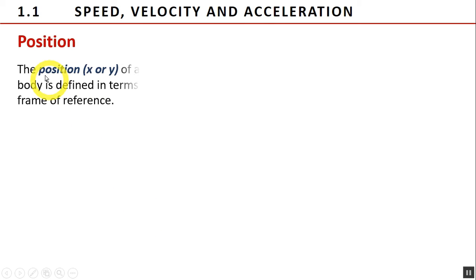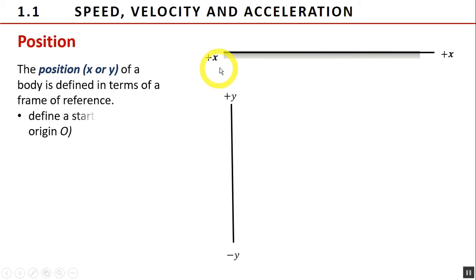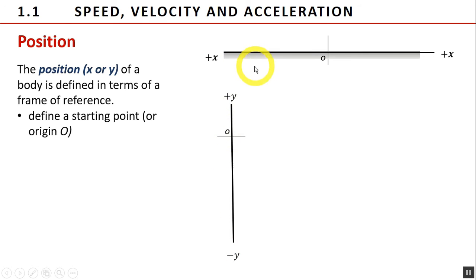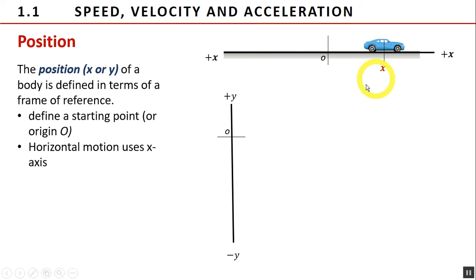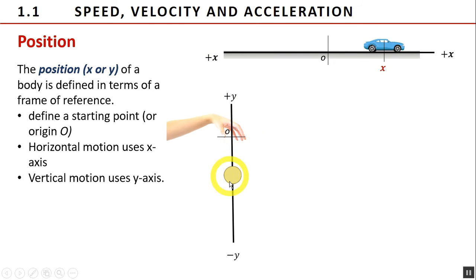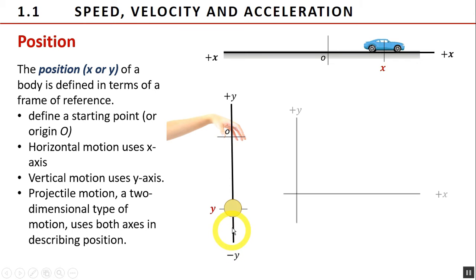The position, x or y, of a body is defined in terms of a frame of reference. It is our choice of coordinate axes that defines a starting point, or origin, for describing motion or any other quantity. For one-dimensional motion, the frame of reference may be either the x or y-axis. Horizontal motion uses the x-axis while vertical motion uses the y-axis. Projectile motion, a two-dimensional type of motion, uses both axes in describing position.